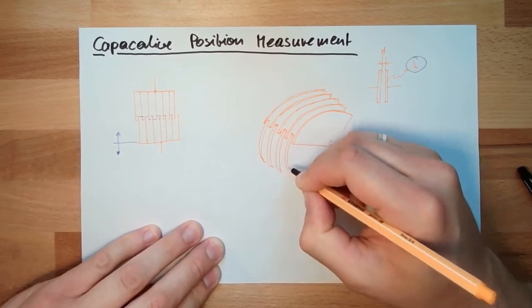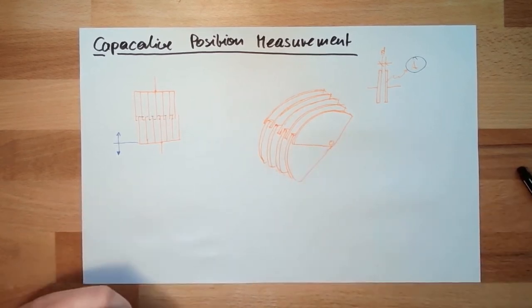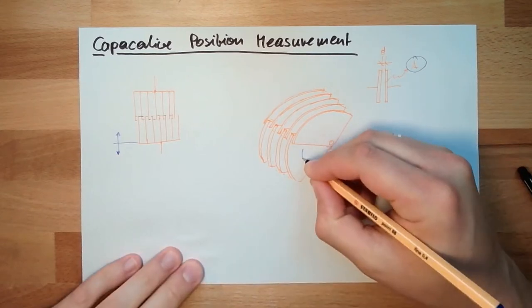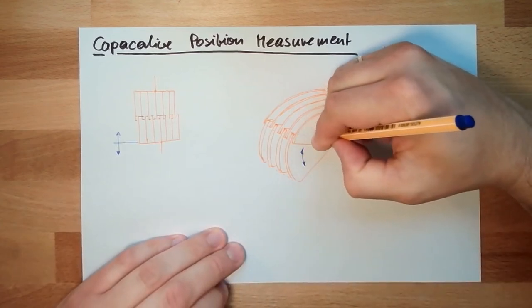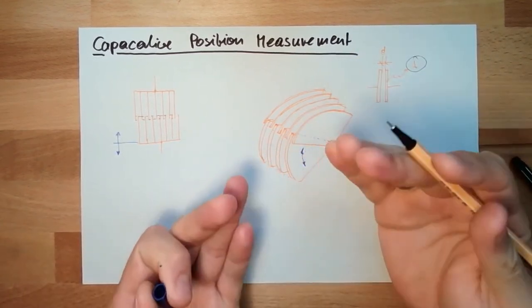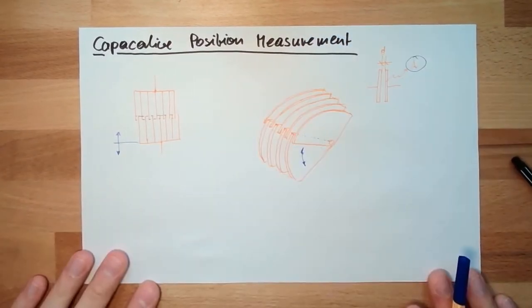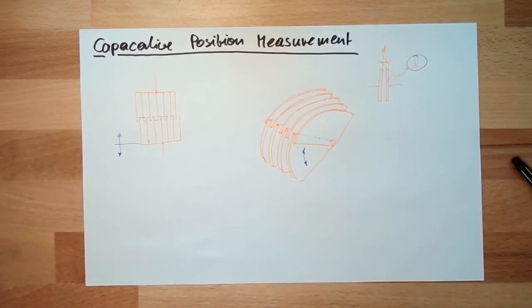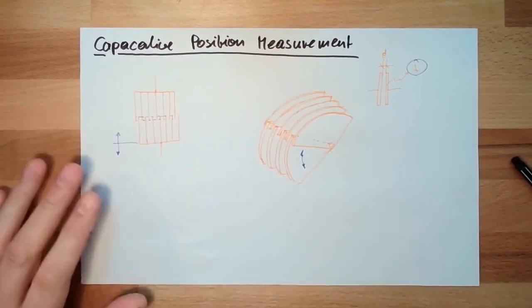This is one blade and these are the other plates, and one part of this plate can be turned. Then the area gets bigger because we have an overlapping part — if I turn them together, the overlapping part will increase. In old radios you might see something like this: rotary capacitors. So this is linear position measurement and this is rotary position or angle measurement.